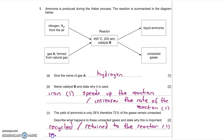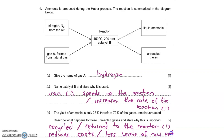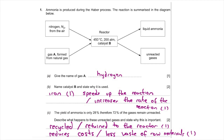An alternative answer for the second mark would be that returning the gases to the reactor or recycling them would result in less waste of raw materials. To summarize: you must mention recycling or returning the unreacted gases to the reactor for the first mark, and explain that this reduces costs or reduces waste of raw materials for the second mark.